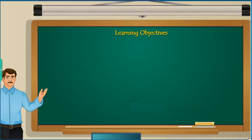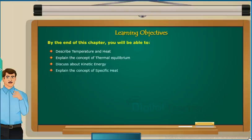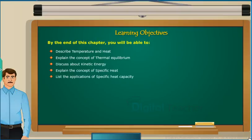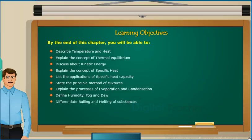Learning Objectives: By the end of this chapter you will be able to describe temperature and heat, explain the concept of thermal equilibrium, discuss kinetic energy, explain the concept of specific heat, list the applications of specific heat capacity, state the principle of method of mixtures, explain the processes of evaporation and condensation, define humidity, fog and dew, and differentiate boiling and melting of substances.